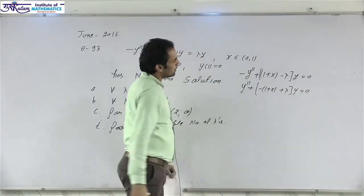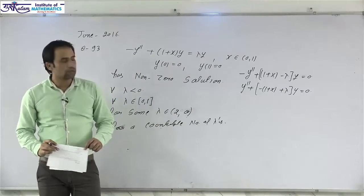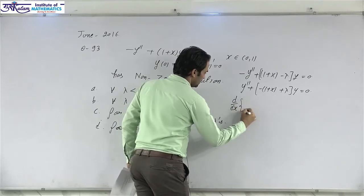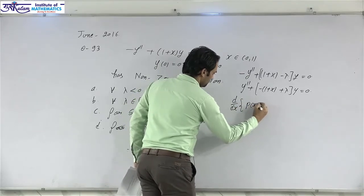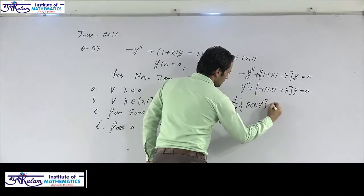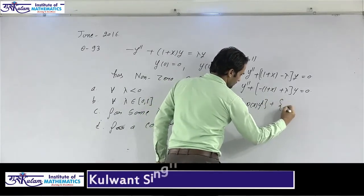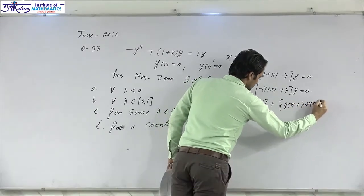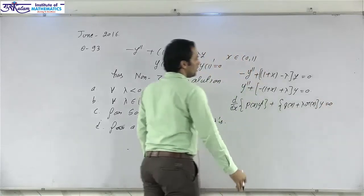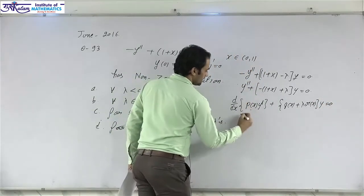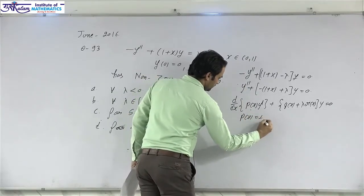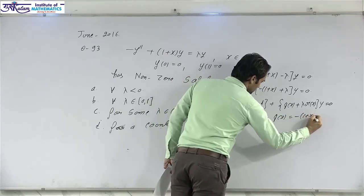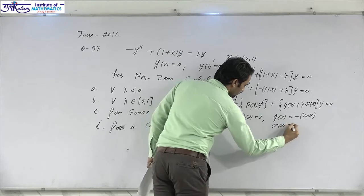Comparing with the standard self-adjoint boundary value problem: d/dx[p(x) y'] + q(x)y + lambda r(x)y = 0, we identify p(x) = 1, q(x) = −(1 + x), and r(x) = 1.